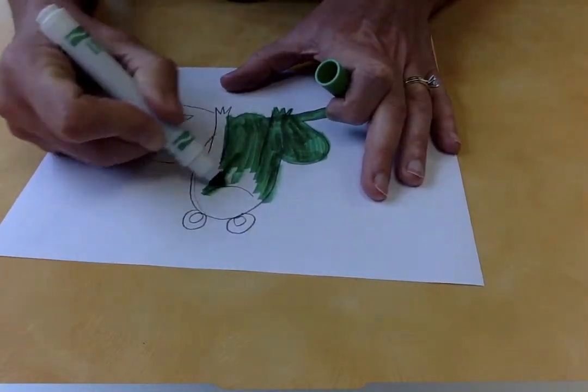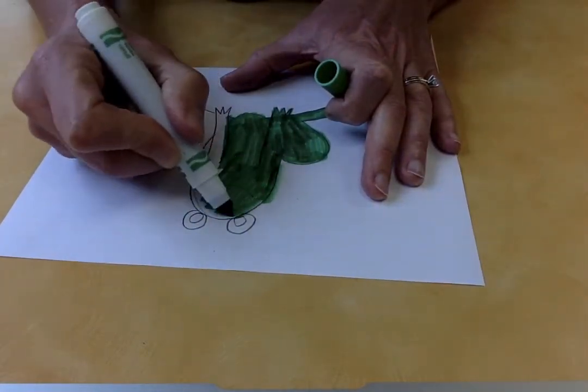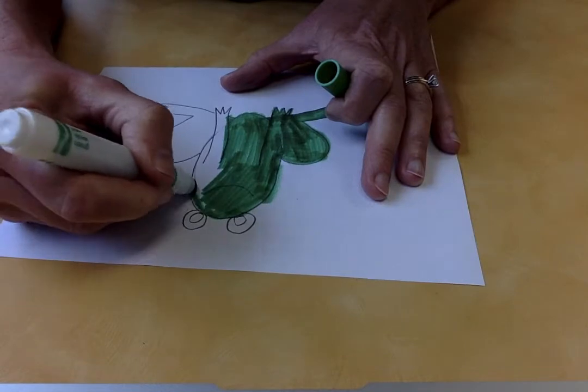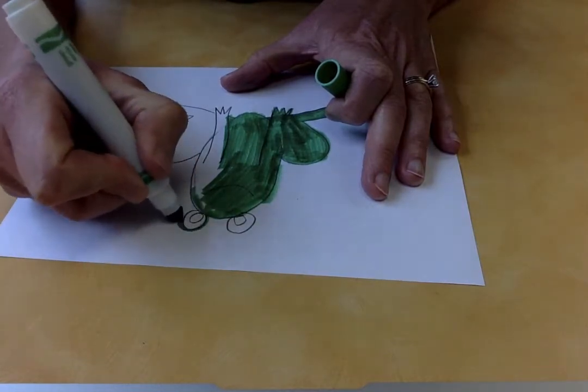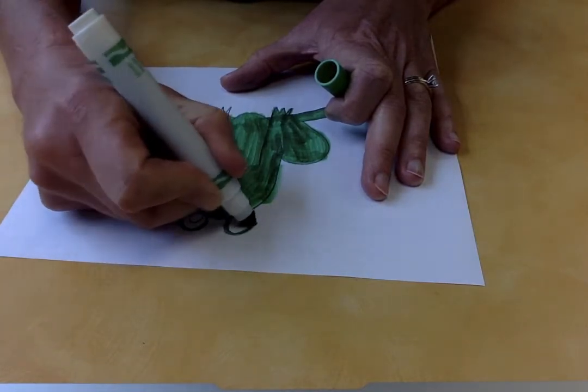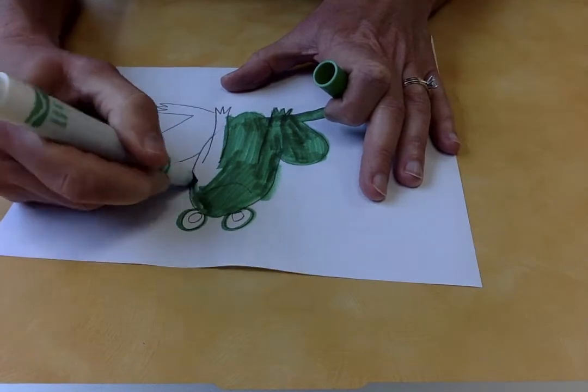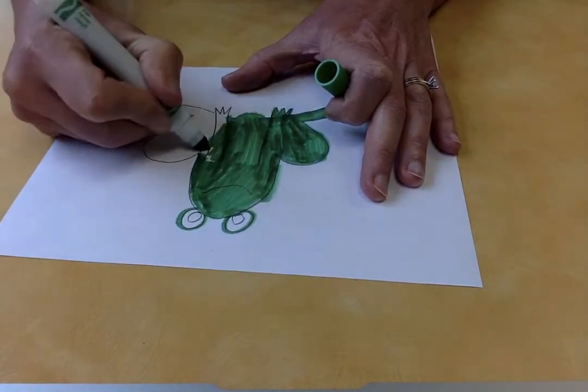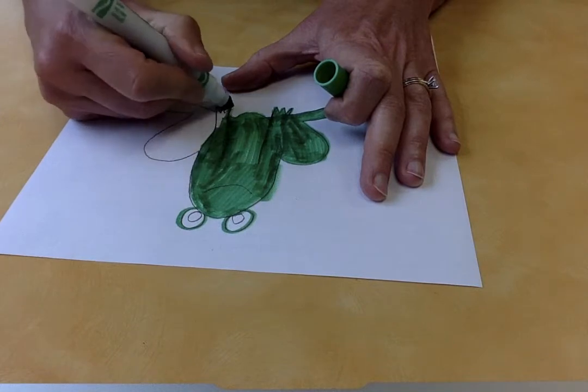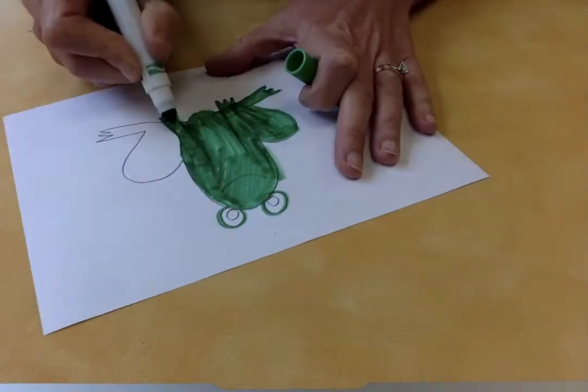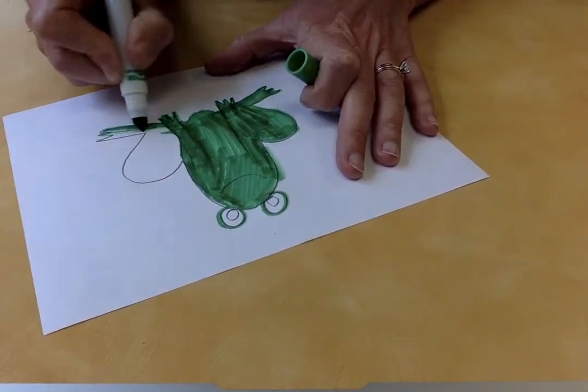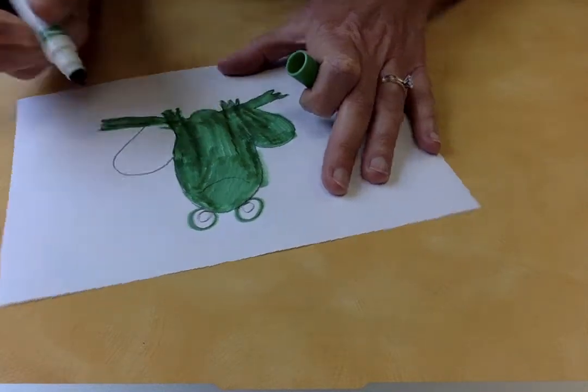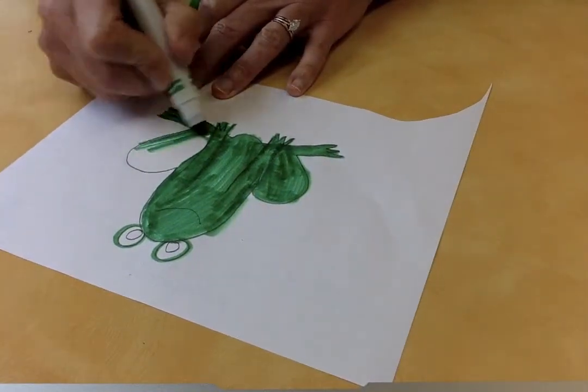Now his eyeballs, I'm gonna be a little bit careful. I'm just gonna outline them with the marker, and then I can use my black marker to color in his eyeballs, feet, and the other leg.